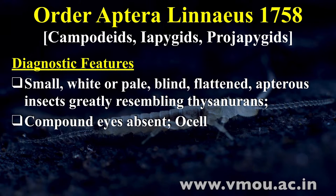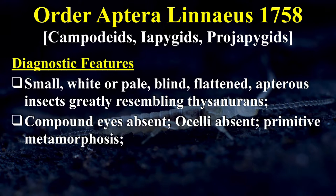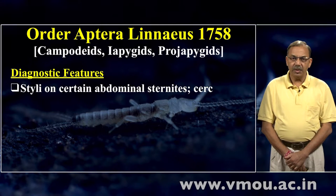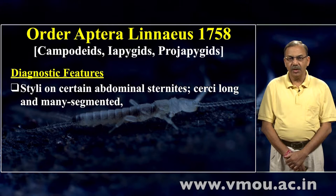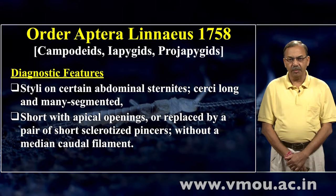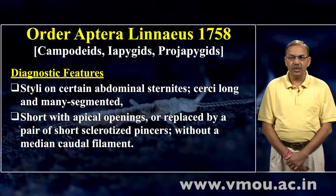हम आगे Thysanura के बारे में पढ़ेंगे। Compound eye absent है, Ocelli absent है — ये अंधे हैं, इन्हें दिखाई नहीं देता। इनमें primitive metamorphosis है — बहुत सरलतम metamorphosis, यानि nymph के बाद भी molting होती रहती है। Antenna बहुत लंबे और काफी segmented हैं। Coxal appendices absent होते हैं। Tarsi एक segment की होती है। Stylie कुछ abdominal sternites पर होती है। Cerci काफी लंबी और बहुत अधिक segmented होती है, या replaced by a pair of short sclerotized pincers without a medial filament — बीच का filament इनमें नहीं होता, सिर्फ दो caudal cerci होती हैं।